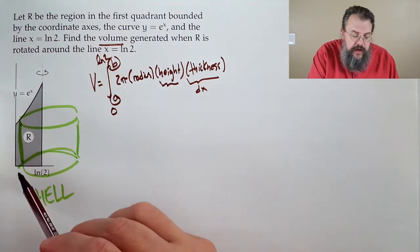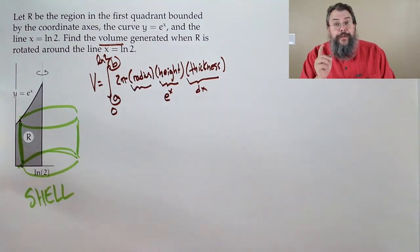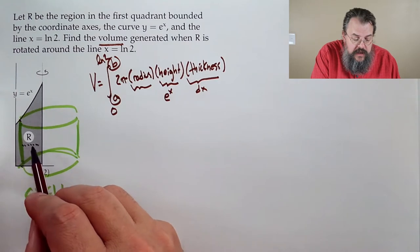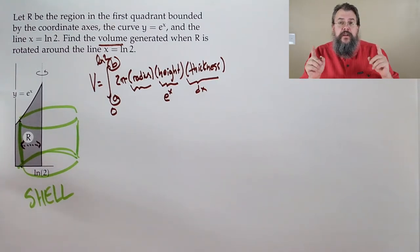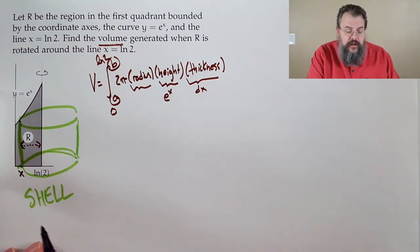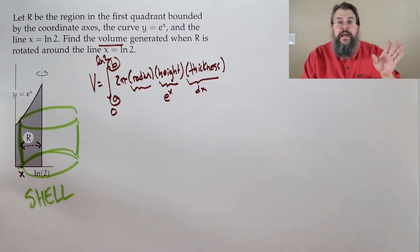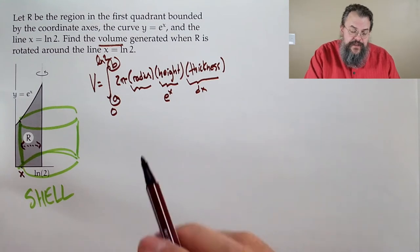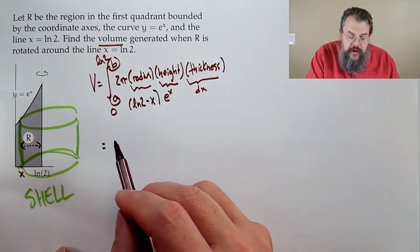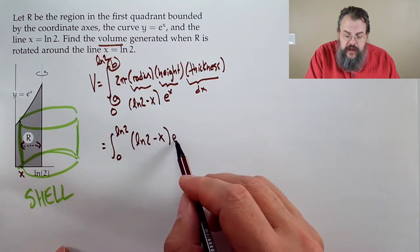The radius is how far we are from where we're spinning — the distance from log two to where we currently are. If we're currently at x, the radius is the high value minus the low value: log two minus x. So we have 2π times the integral from zero to log two of (log 2 − x)(e^x) dx.